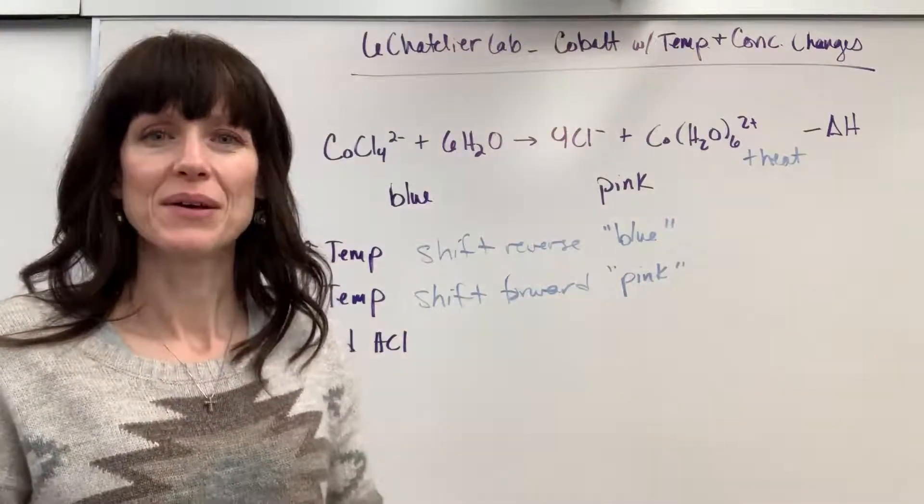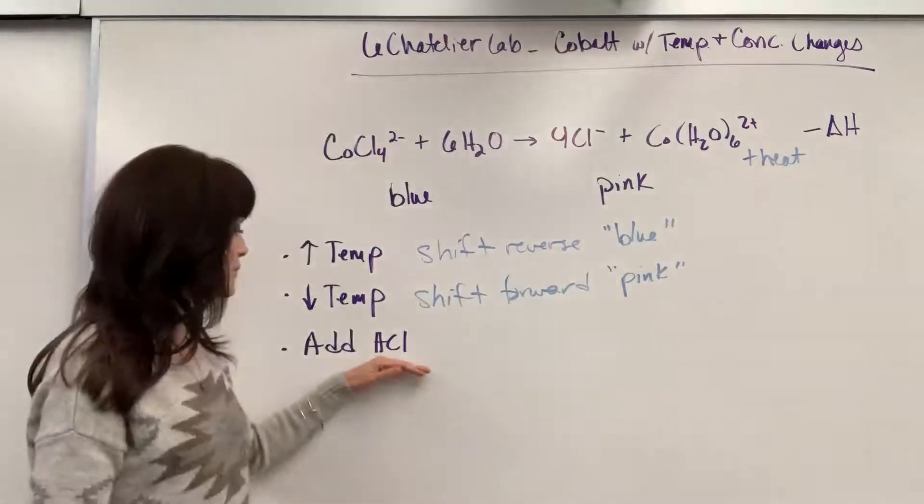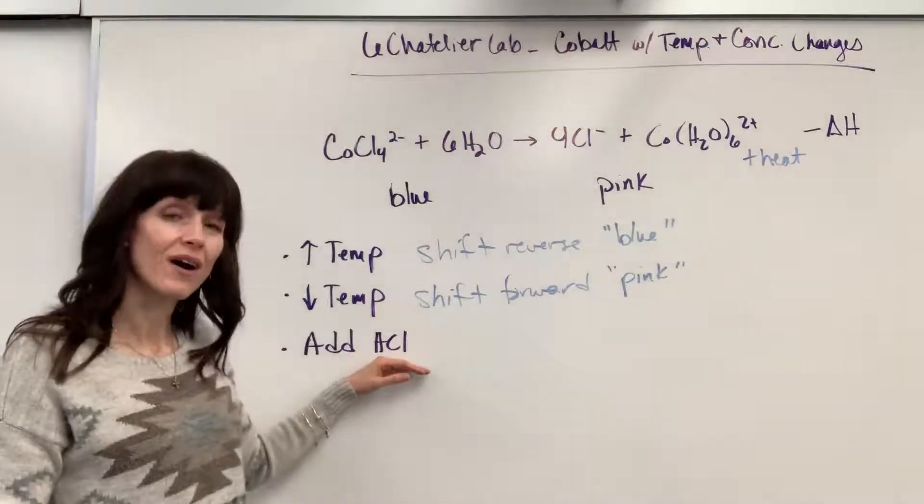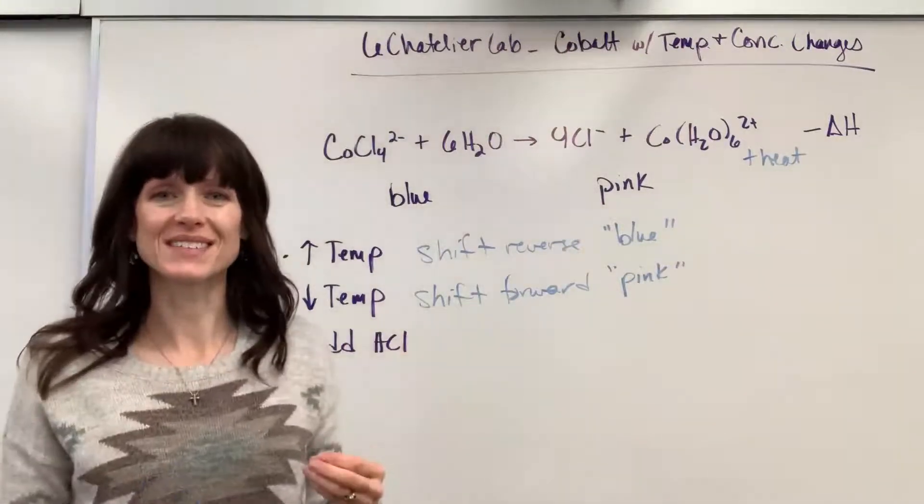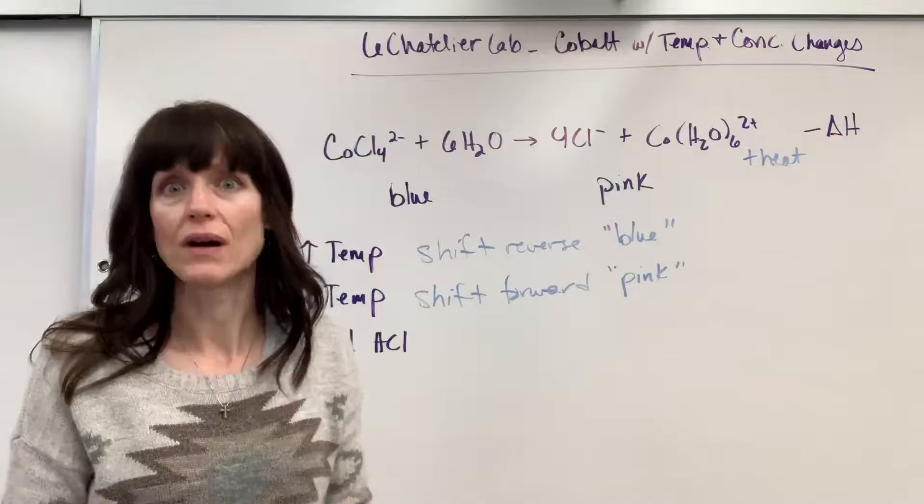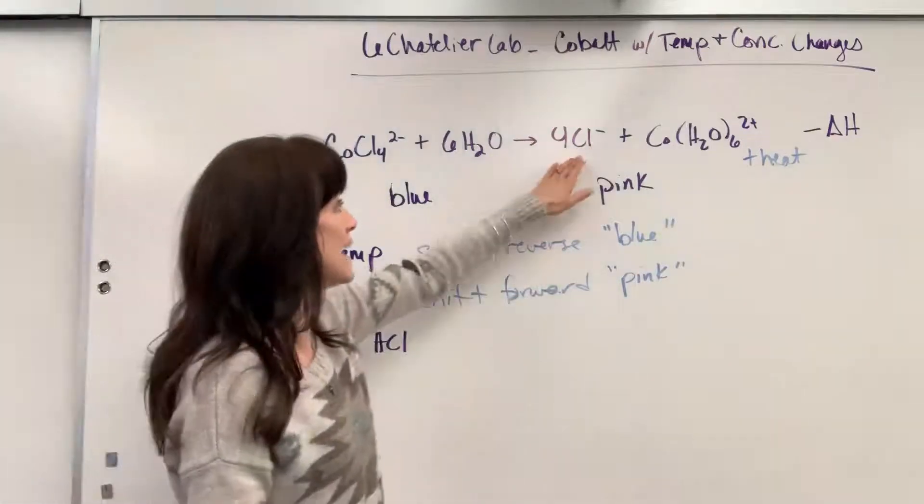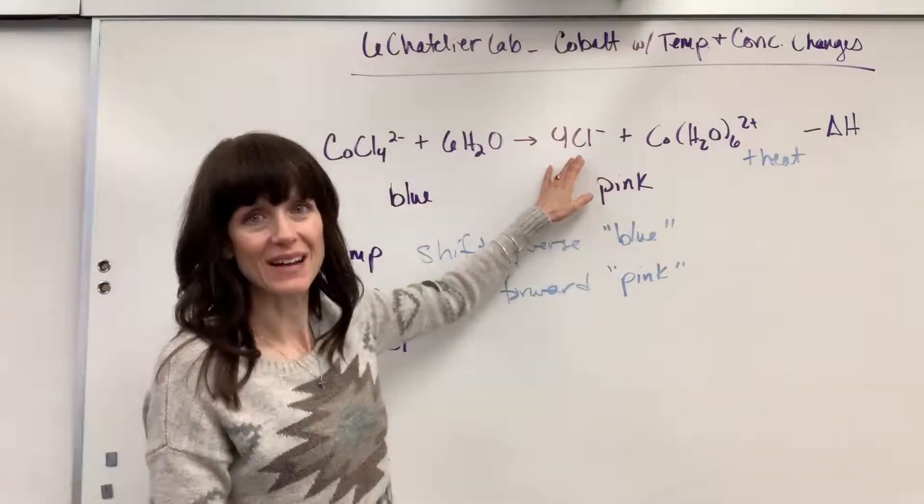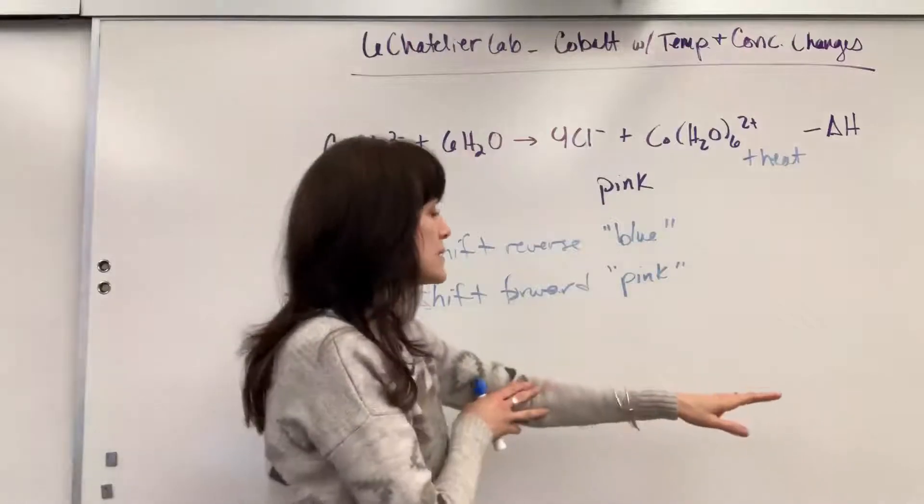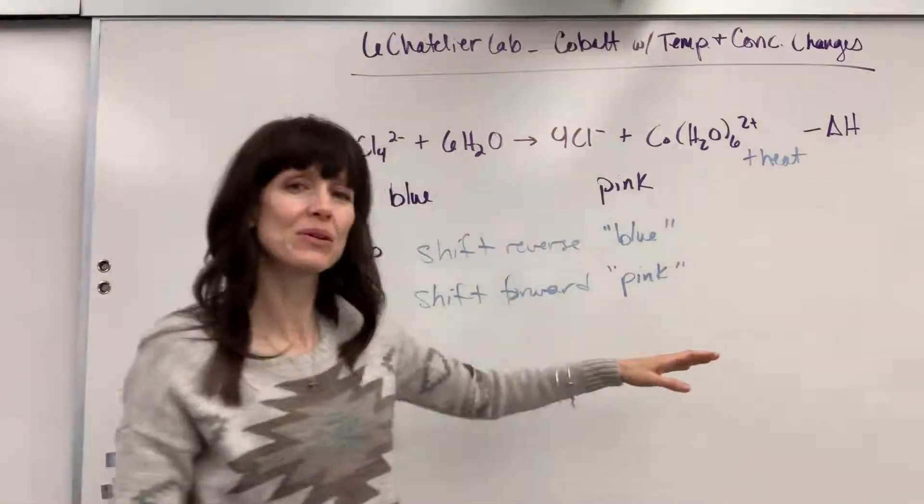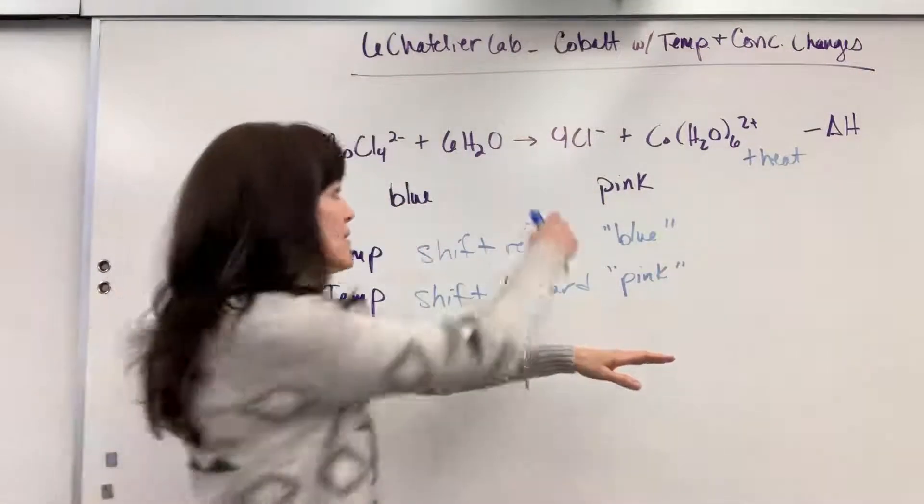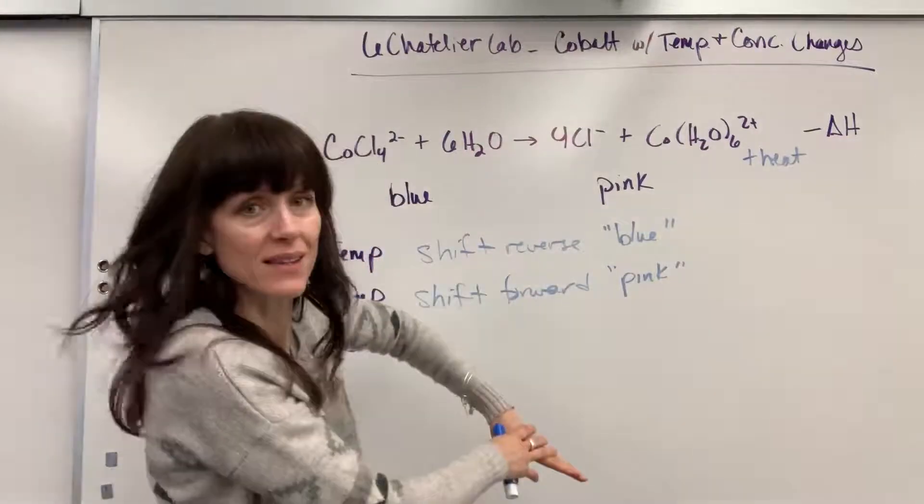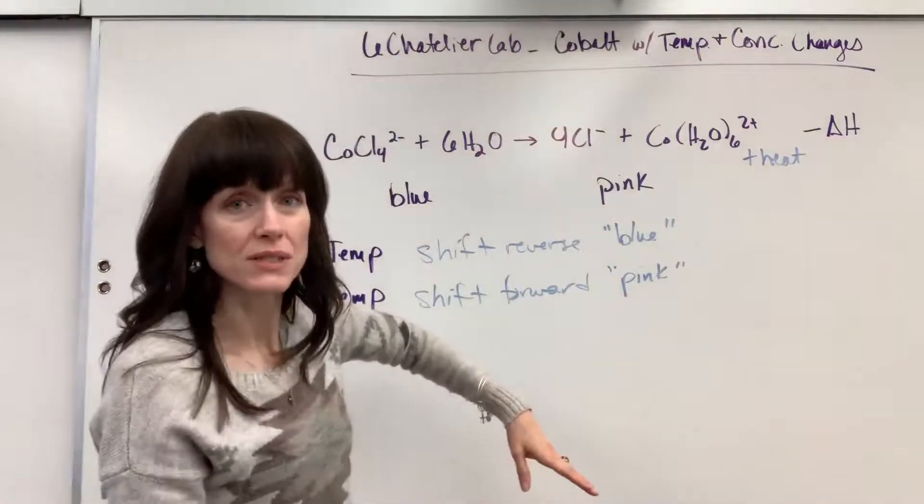Well, you'll recall hydrochloric acid is a strong acid, 100% ionizes. So when I add this 12 molar HCl, I'm really adding the chloride ion. So we're at perfect equilibrium. I add the chloride ion. What happens? I've got too much of that. It goes down like this. It's heavy, too much. So which way is it going to shift?